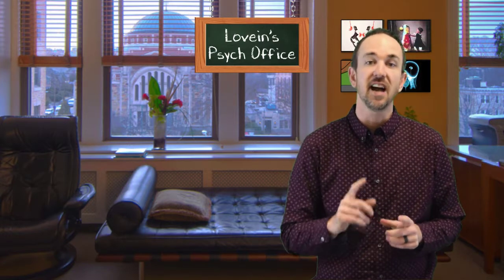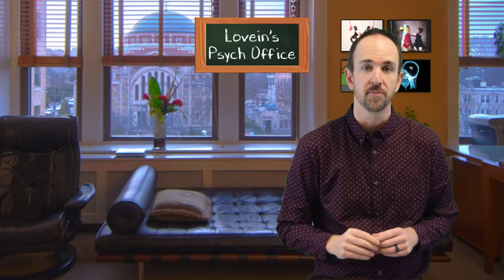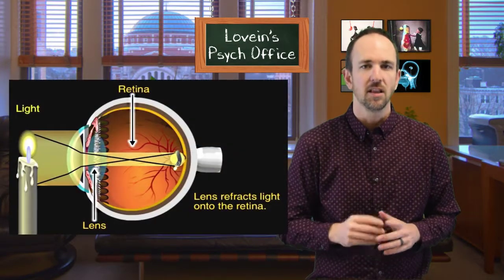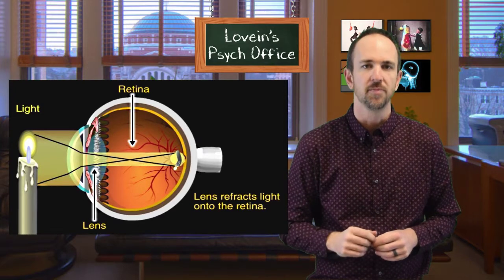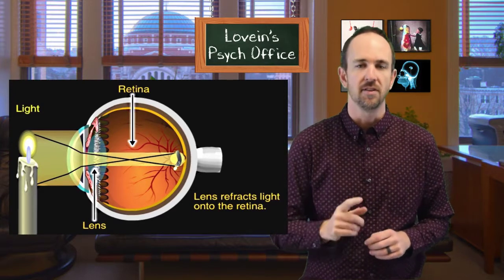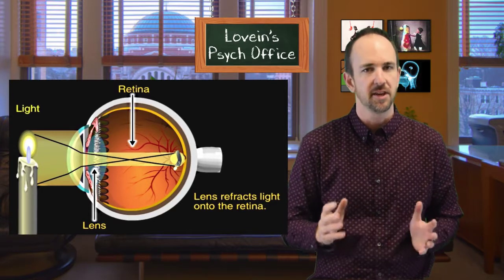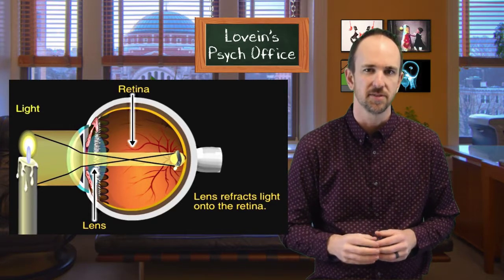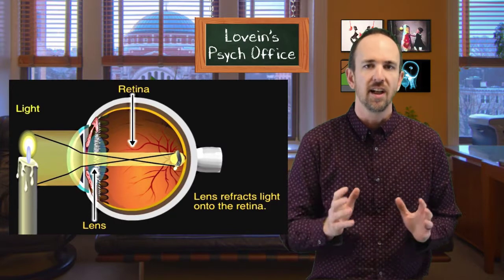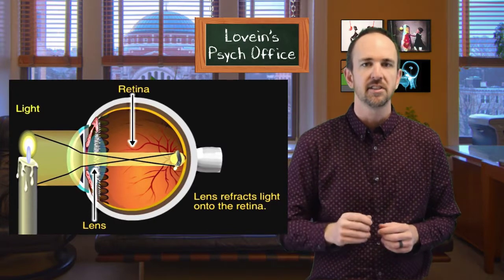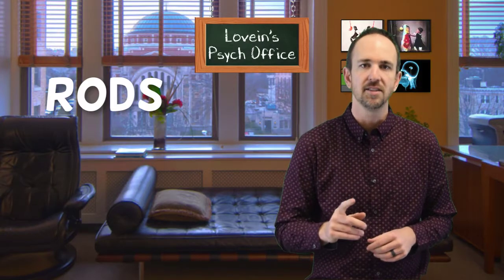Let's take a minute to examine the process the eye goes through when receiving information from the outside world. Light from a candle passes through the cornea and the pupil and gets focused and inverted on the lens. The light then lands on the retina where it begins the process of transduction into neural impulses. It is then sent out through the optic nerve. When the light reaches the back of the retina, it triggers a chemical change in two types of receptor cells.